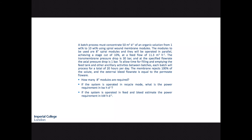Welcome to this worked membrane problem. In this particular example, a batch process is used to concentrate 50 cubic meters per day of an organic solution from 1 weight percent to 10 weight percent. The modules operate in parallel with a stage cut of 10 percent and the feed flow to each one is 11.3 cubic meters per hour. The transmembrane pressure drop is 30 bar at that specified flow rate and the actual pressure drop is one bar.